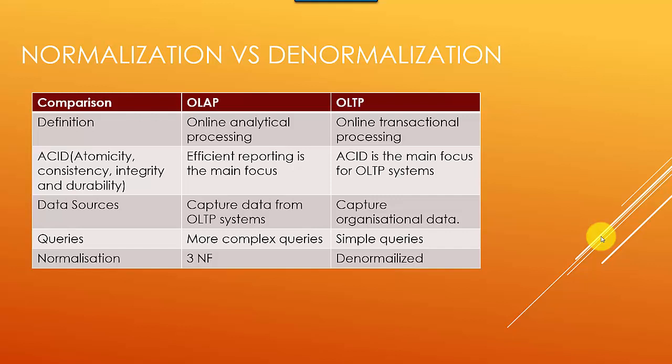With OLAP the focus is efficient reporting, while with OLTP it is more important to maintain the integrity of the data. OLAP systems essentially capture data from OLTP systems — multiple OLTP systems could be feeding into the OLAP system, and you could build a dimensional model or a reporting schema. For example, you've got customer data coming from OLTP1 and OLTP2, and you build rules to identify which customer data you want to capture.